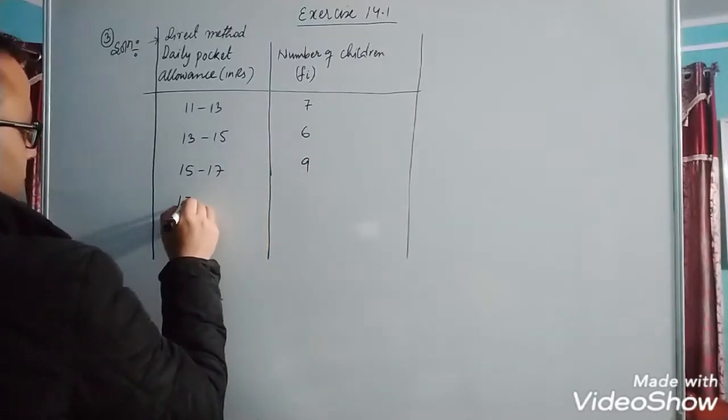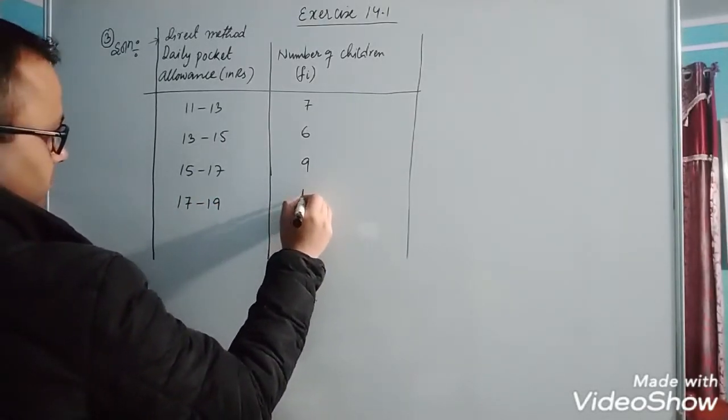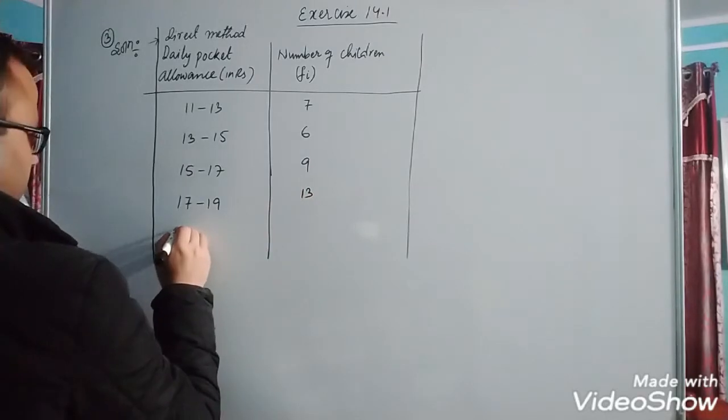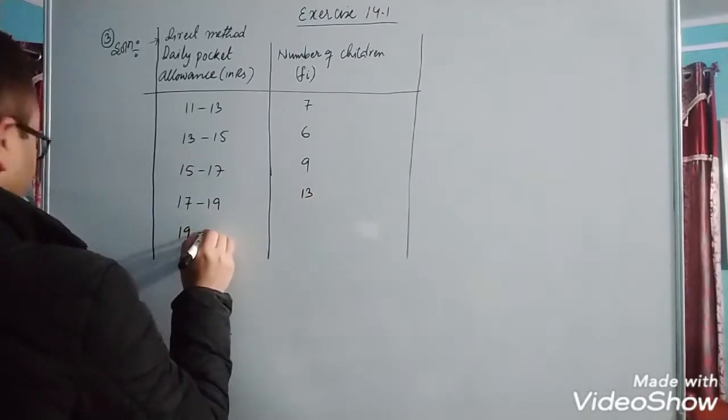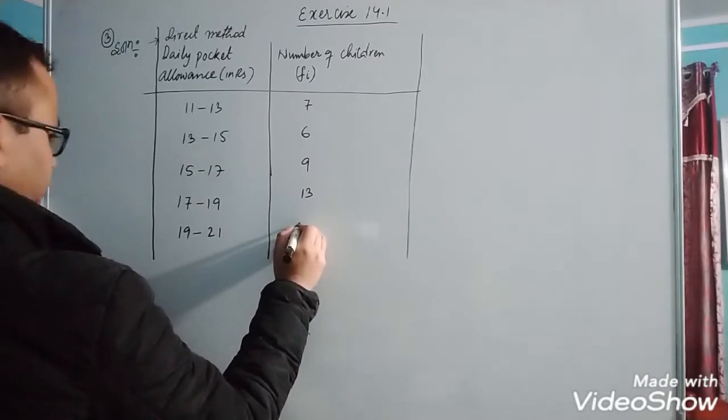For 19 to 21, number of children is f. For 21 to 23, number of children is 5.